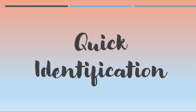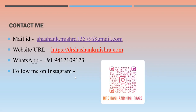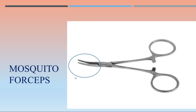This is the first instrument very commonly seen by all of us in any surgical or medical specialty — the mosquito forceps. In mosquito forceps, just focus on two important things: the tip part and the joint.